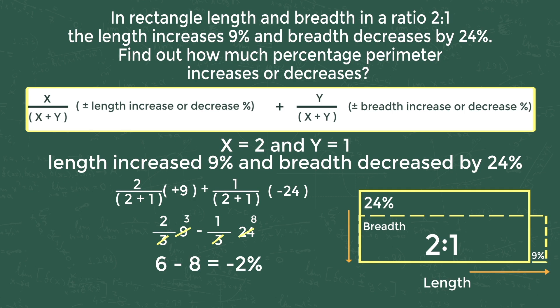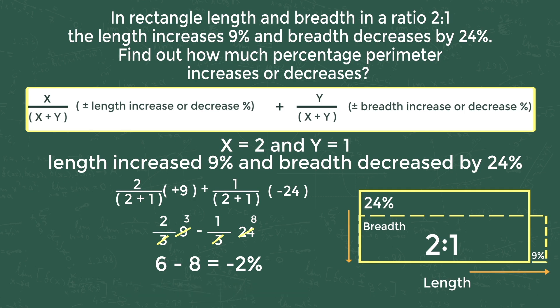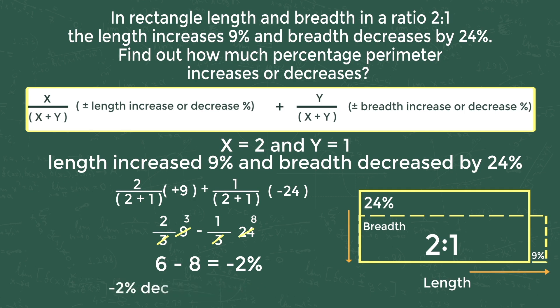We need to determine whether the perimeter increased or decreased. Whenever you get a positive value, the perimeter has increased. Whenever you get a negative value, the perimeter has decreased. As we got a negative value of minus 2%, the perimeter decreased. So the answer is 2% decrease in the perimeter.